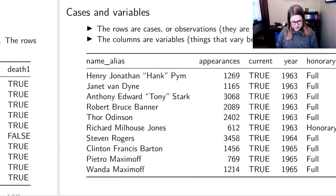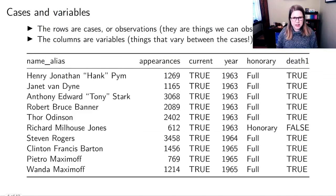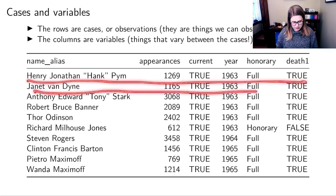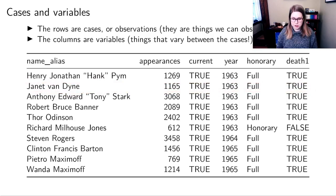This data set that I've got here is data about the Avengers. I got it from 538, which is an online site that does a lot of data journalism. They have some data about the Avengers, which I don't know much about. But when we think about tidy data, we have cases, and we have variables. In this example, the rows are the cases. And in this case, they are different people or different Avengers.